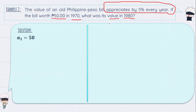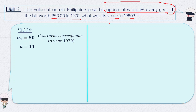Since this is a geometric sequence, the first thing we solve is the common ratio. The given values: a sub 1 equals 50 pesos, corresponding to the year 1970. For n, counting from 1970 to 1980 — 1970, 1971, 72, 73, 74, 75, 76, 77, 78, 79, 1980 — gives 11 terms. So n equals 11, meaning the 11th term corresponds to year 1980.